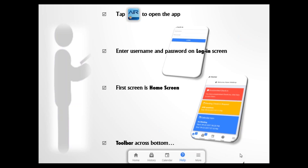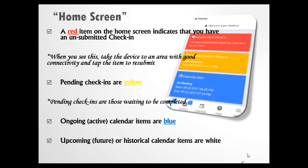The home screen will show you all your calendar items and anything going on with your check-ins. If you've got a red item, that's an unsubmitted check-in — it means you completed the questionnaire but your device was not able to upload it. Take the device to an area with good internet service and tap on that red item to resubmit. That should take care of it.